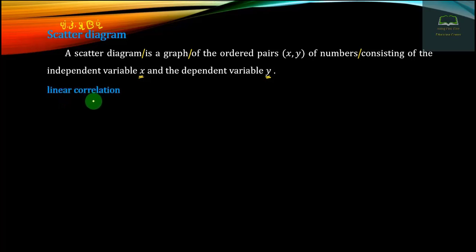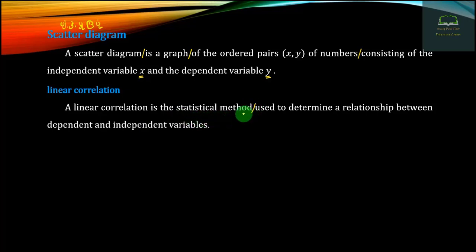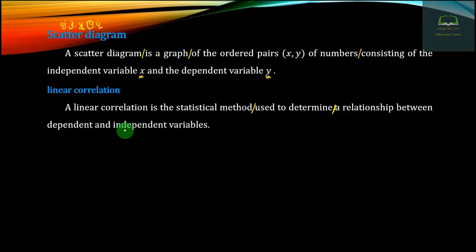Linear correlation is a statistical matter. We usually close the variable with the variable W. L is used to determine the relationship between the independent and dependent variables.